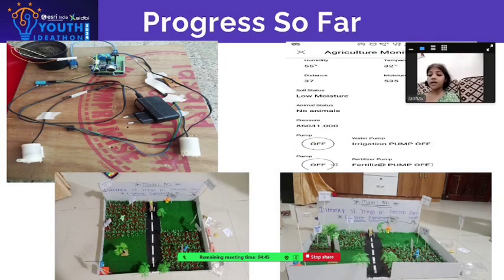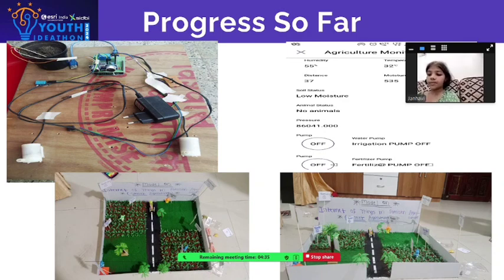We covered crucial features like automatic irrigation, security through motion detection, and disease monitoring. When this system is fully implemented, it should greatly enhance the efficiency and security of farm operations.